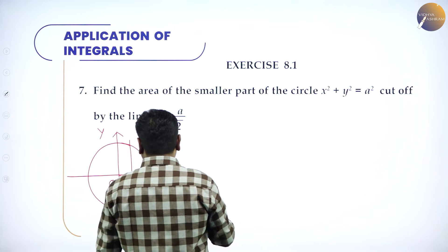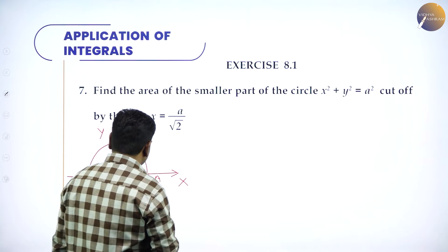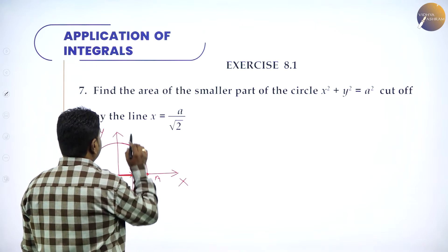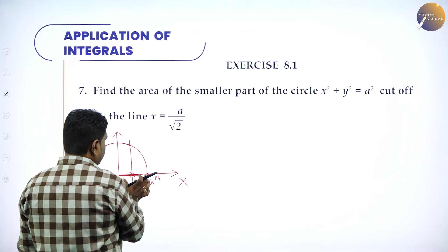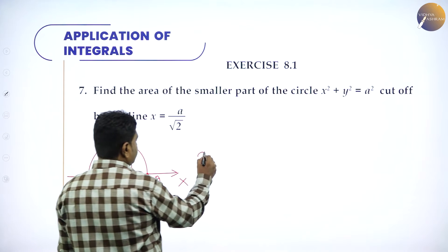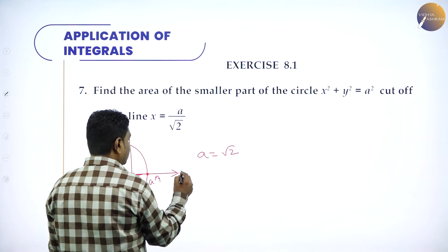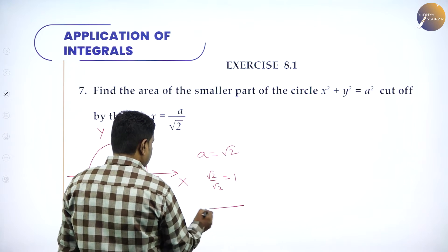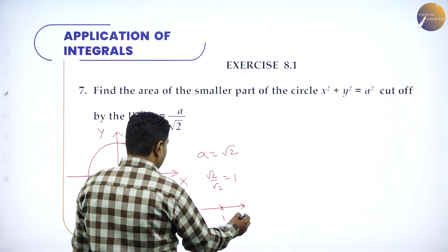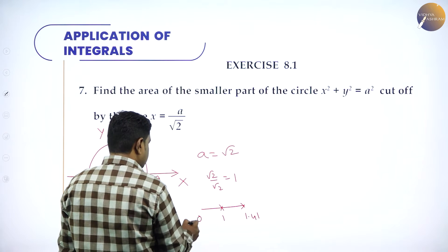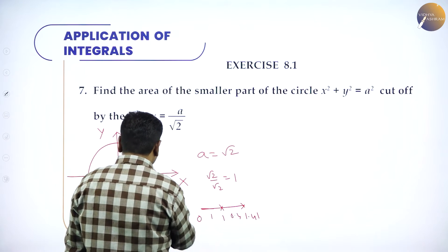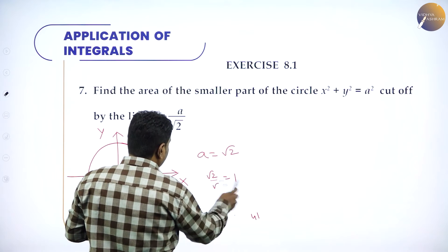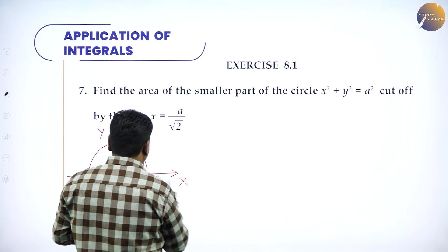To understand which part is smaller: if a = √2, then a/√2 = 1, the line is at x = 1, and the radius is √2 ≈ 1.414. So from 0 to 1 is a larger portion (1 unit), and from 1 to √2 is about 0.41 units — that is the smaller part. So the required area is the region between x = a/√2 and x = a, bounded by the circle.